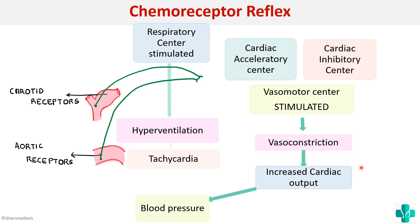Due to vasoconstriction from chemoreceptor reflex activation, there will be increased cardiac output, bringing blood pressure back to normal. One might think there will be both tachycardia and increased BP, but the cardiac inhibitory center is also activated, causing bradycardia. So there won't be much tachycardia — only a slight increase in heart rate — but blood pressure will increase. This is how the chemoreceptor reflex works when BP falls.